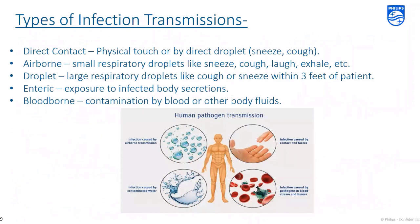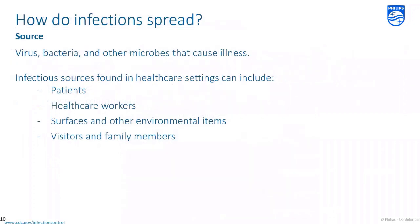There are a number of different ways infections may be transmitted, including direct contact, airborne, droplet, enteric, and bloodborne. We will discuss several of these in detail later in the webinar. An infection first needs a source — an infectious agent. These can be viruses, bacteria, or other microbes.